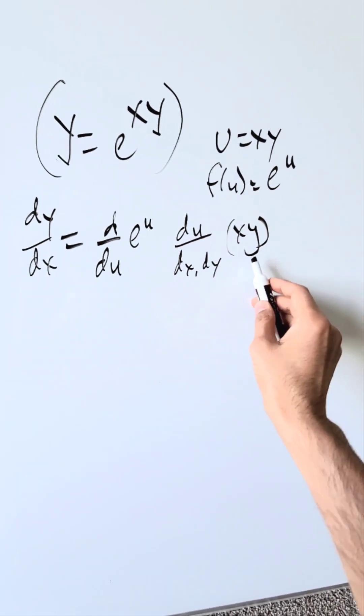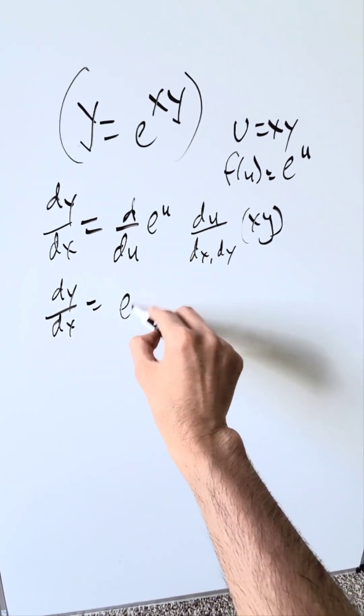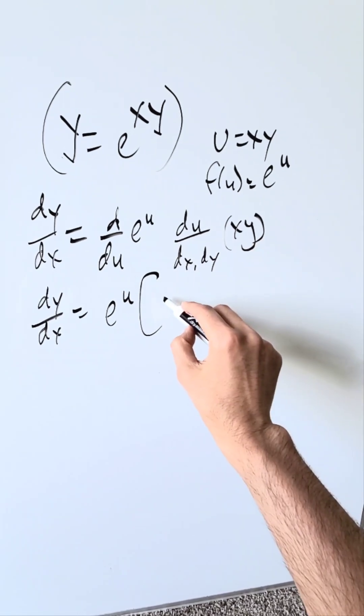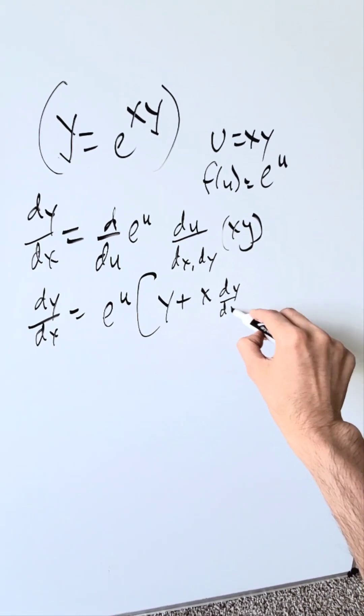You will do the product rule here. Let's proceed: dy/dx, the derivative of e to the u is e to the u. The product rule over here, y times the derivative of x which is just one, you'll have a y plus x times the derivative of y, you'll have here dy/dx.